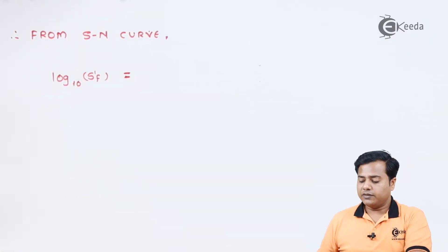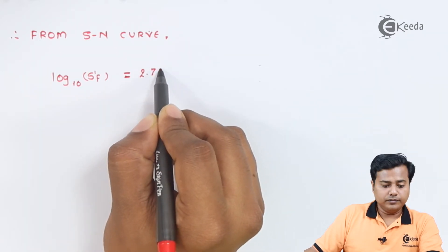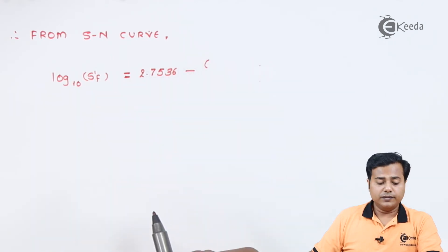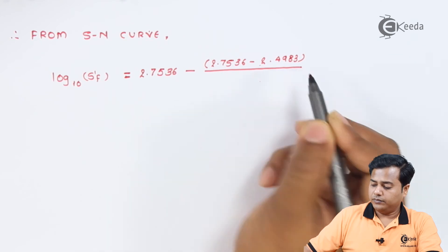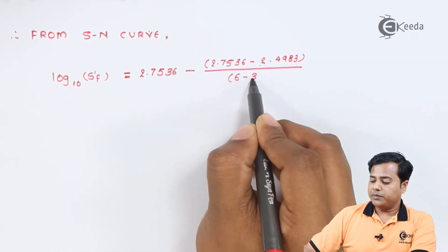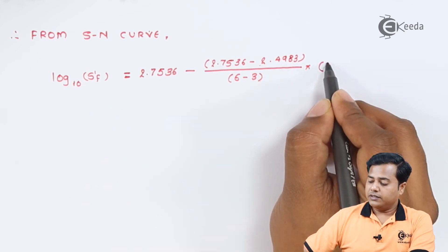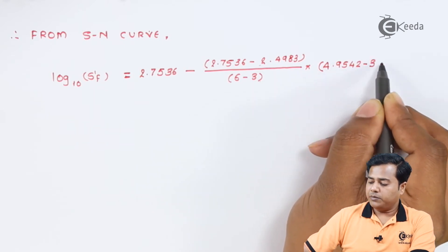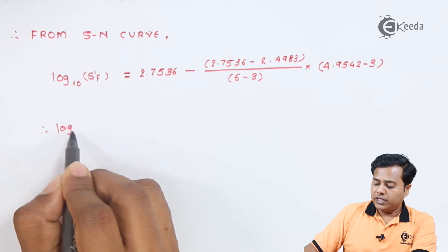So from the S-N curve, let us write down the interpolation function, which gives us the desired strength. Logarithmic value will be given by the maximum value 2.7536 minus the difference between these two values (2.7536 - 2.4983) divided by the difference between the maximum cycle and minimum cycle (6 - 3), into the difference between the existing cycles, which is 4.9542 minus the minimum cycle 3.